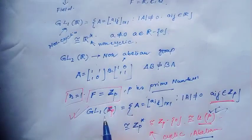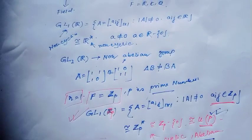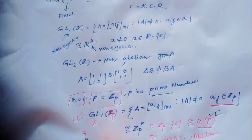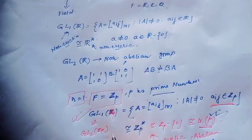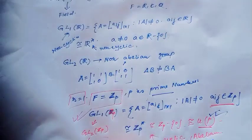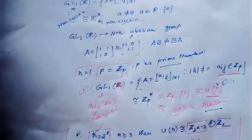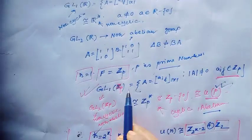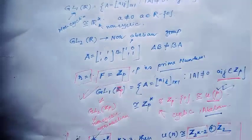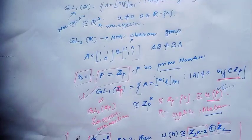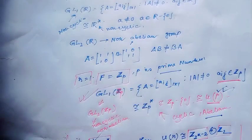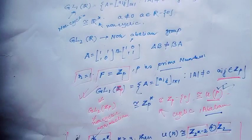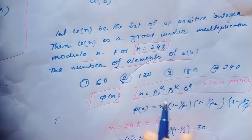So GL(1, Zp) is a cyclic abelian group. But if we consider n equal to 2, then GL(2, Zp) is non-cyclic and non-abelian. This group is cyclic only when the field is Zp and n equals 1; for n equal to 2, 3, 4, or higher, it is not cyclic.